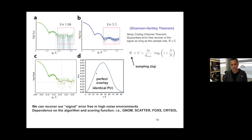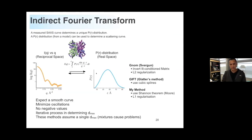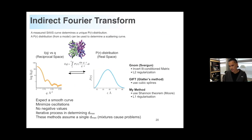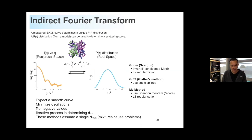There are different methods to go from reciprocal space to real space. One is GNOM, a very popular method from Svergun's group at EMBL and part of the ATSAS package. There's also Glatter's method called GIFT, and multiple methods in Scatter. Basically, it's an iterative process — you expect the P(r) distribution to be a smooth curve with minimal oscillations, no negative values for practical purposes, and these methods assume a single D_max.